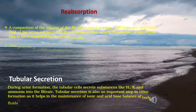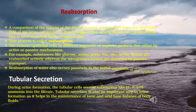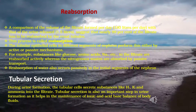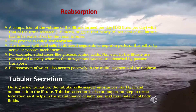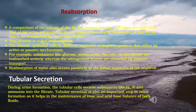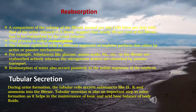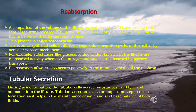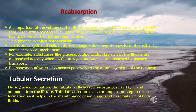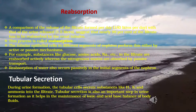Comparing the filtrate volume of 180 liters per day with urine output of 1.5 liters per day indicates that nearly 99 percent of the filtrate must be reabsorbed by the renal tubules. This process is called reabsorption. Tubular epithelial cells perform reabsorption either by active or passive mechanisms. Substances like glucose, amino acids, and sodium are reabsorbed actively, whereas nitrogenous wastes are absorbed by passive transport. Water is also reabsorbed passively in the initial segments of the nephron.